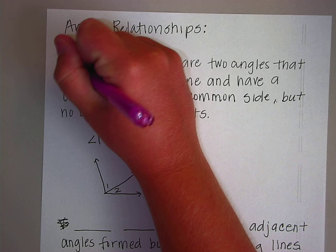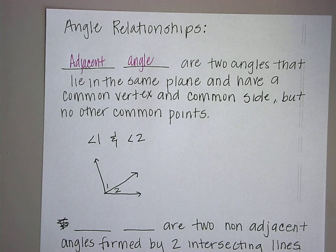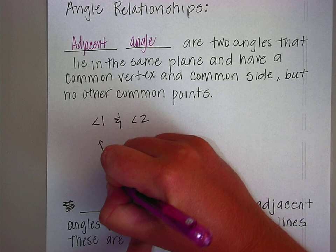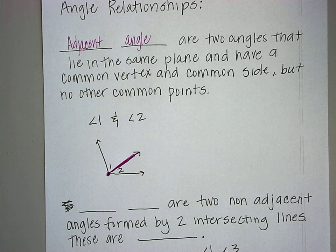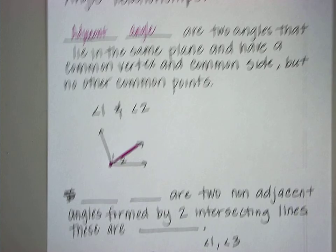The first one is considered an adjacent angle. They lie in the same plane — they have a common vertex and a common side, but no other common points. Here is an adjacent angle: here's our common vertex and here's our common side. We don't do a lot with adjacent angles because we don't really solve problems with them, but I want you to be able to see it.